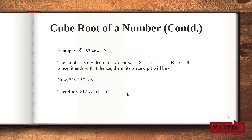Let's see one more example with a 6-digit number: 157,464. The method remains the same. The left-hand side will have 3 digits and the right-hand side will also have 3 digits. The number is ending with 4, which means the unit's place of the cube root will also end with 4. 157 lies between the cube numbers of 5 and 6. Considering the lower number, the cube root of 157,464 is 54.